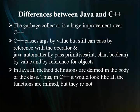C++ passes arguments by value but can still pass by reference with the ampersand operator. Java automatically passes primitives by value and objects by reference.